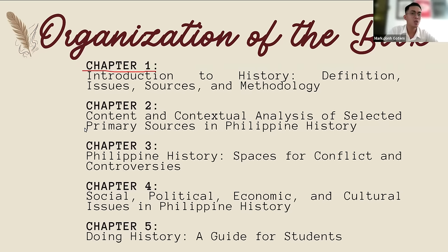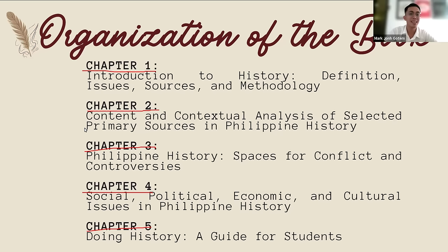Chapter two is all about the content and contextual analysis of selected primary sources in Philippine history. Chapter three talks about Philippine history — spaces for conflict and controversies. Chapter four covers the social, political, economic, and cultural issues in Philippine history. And lastly, chapter five is all about doing history: a guide for students.